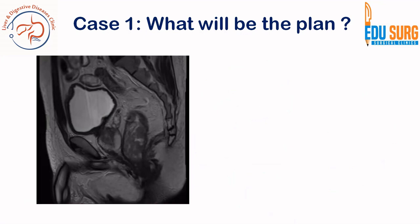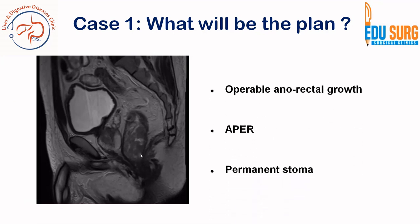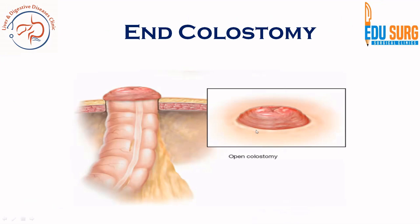Let us now see some cases actually managed in our unit and see how the plan was decided for stoma. This is an MRI of the rectum — we have a separate video on MRI rectum for planning surgery for cancers. This patient had a growth in the rectum and needed an APR because there was no way to preserve the sphincter. You can see the disease is well below the anal-coccygeal line, and this patient will need a permanent end colostomy, because the entire rectum and anal canal are being removed.